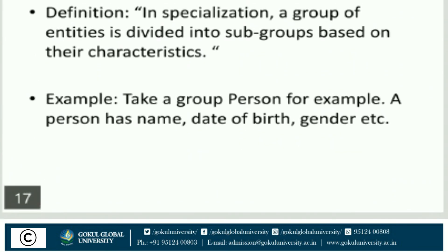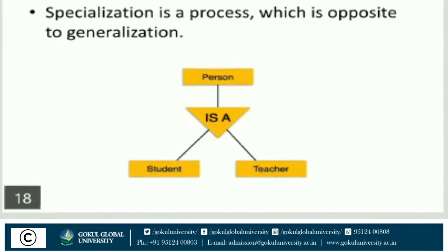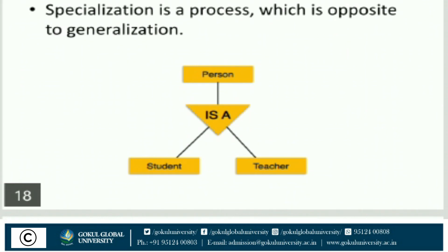Now we can understand the term specialization. Specialization is defined as a process where a group of entities is divided into subgroups based on their characteristics; these subgroups are called specialization. Specialization is a process which is opposite to generalization. For example, a person has name, date of birth, gender, etc. A person can be a student, a teacher, a principal, or a peon. You can see in the diagram that a normal person is also a student, also a teacher, and also a peon or principal.